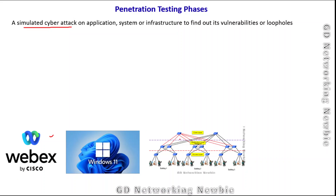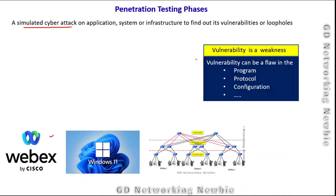A vulnerability is actually a weakness. That weakness can be in a program installed on a computer, in protocols that routers and switches operate on, or in the configurations of those devices. A simulated cyber attack to find out these weaknesses is known as pen testing or penetration testing.